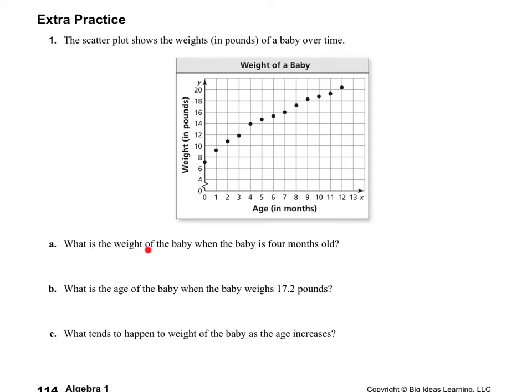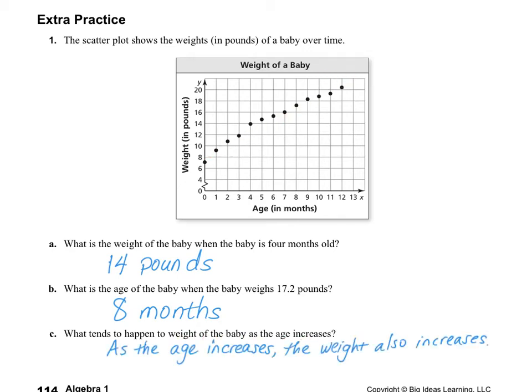So we're just going to use this to help us answer the question. So the first question says, what is the weight of the baby when the baby is 4 months old? So we need to find out when the baby is 4 months old and go up, and that would be 14 pounds. So our answer is 14 pounds. The next question says, what is the age of the baby when the baby weighs 17.2 pounds? So I'm going to look at my weight in pounds. 17.2 is right around here, so I'm going to come across. It looks like it's that point there. So the answer would be 8 months. And the last question asks, what tends to happen to the weight of the baby as the age increases? So as you can see, it's a positive correlation. So as the age increases, the weight also increases.